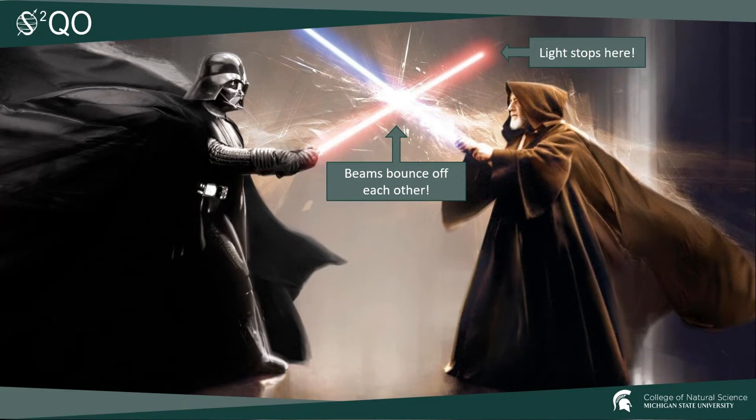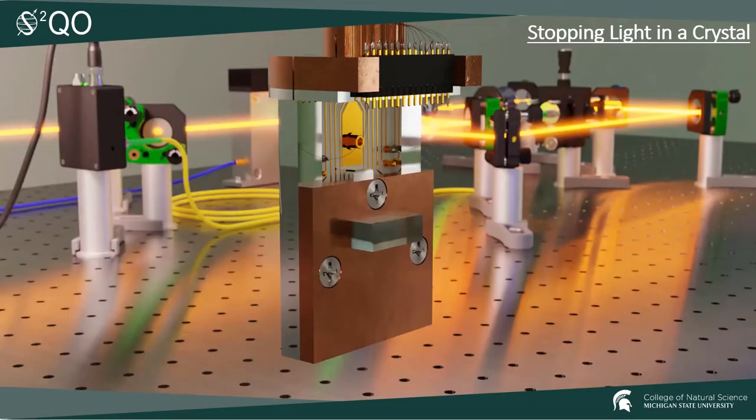Nevertheless, these are exactly the two things that we want our photons to do in the lab. So how do we do this? Well, we have these special crystals, and in our lab we typically have them mounted to a cryostat, because we have to perform our experiments at very low temperatures.